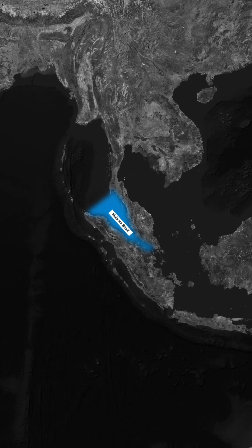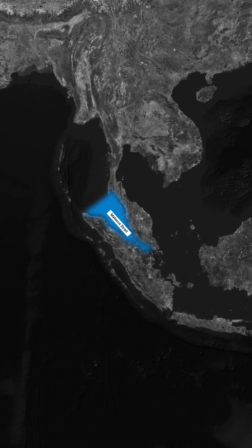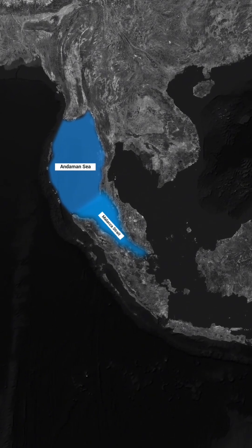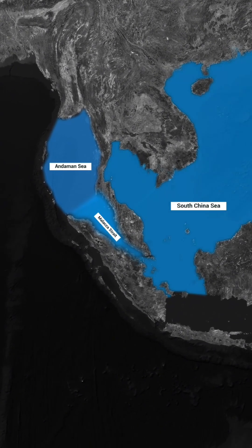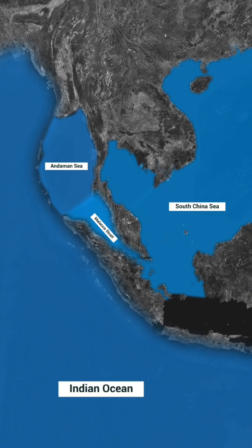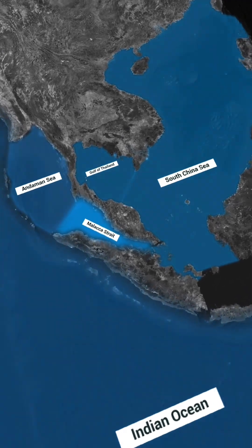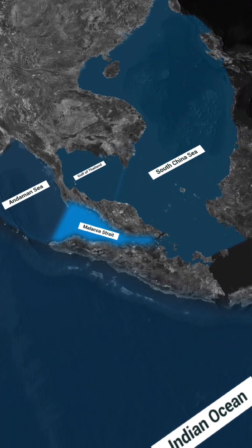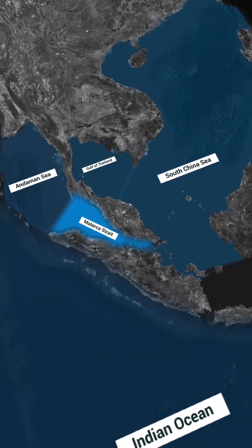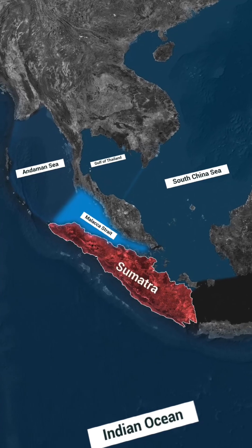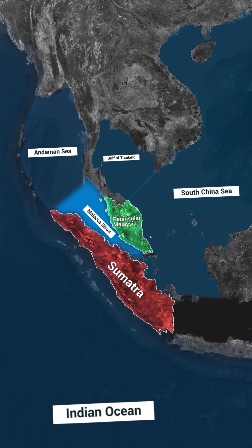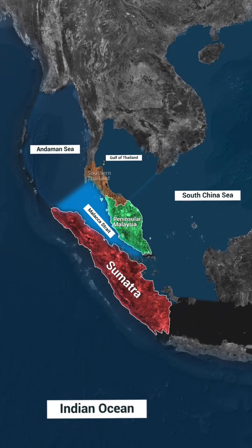The Molucca Strait connects the Andaman Sea and the South China Sea of the Indian Ocean. It is located between the Indonesian island of Sumatra and the Peninsular Malaysia and Southern Thailand.